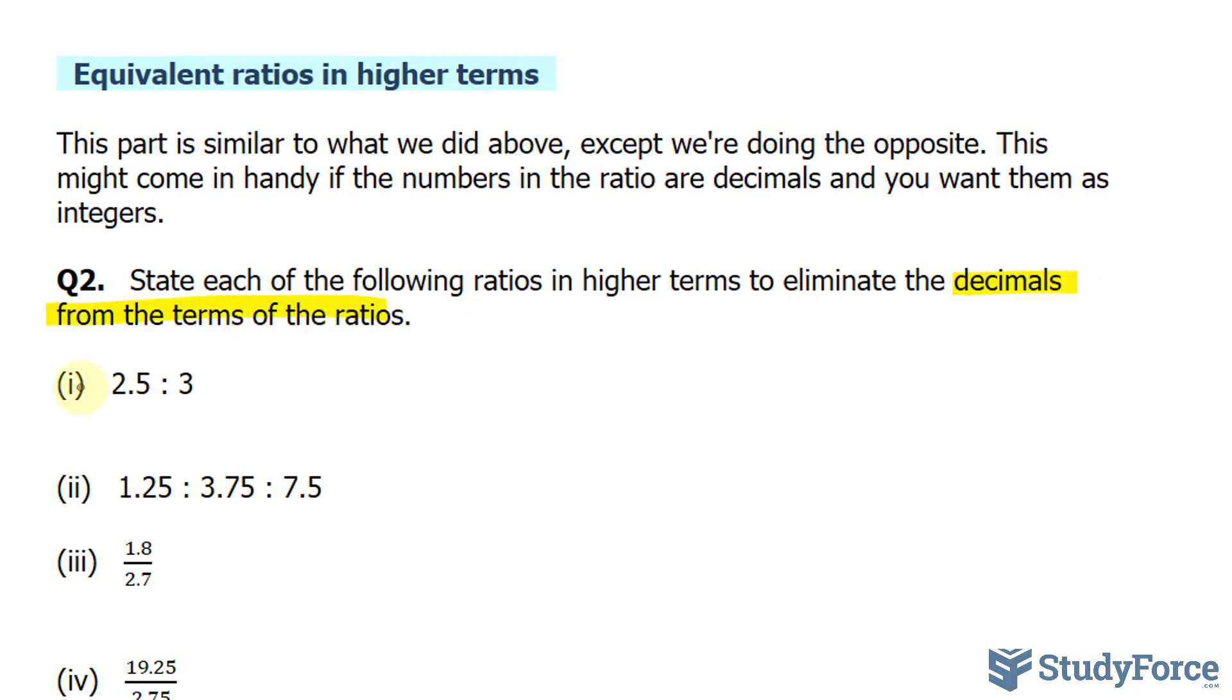In our first example, we have 2.5 to 3, and what you want to do is multiply both of these terms by a factor of 10. The reason why I chose a factor of 10 is because there's one number in the ratio that has one number after the decimal place. In our case here, 5. So the amount of digits after the decimal place dictates how many zeros after that first. If that's confusing to you, it will become more clear in the next example. So if I multiply this by 10, I end up with 25. And if I multiply this by 10, I end up with 30. This right here is in higher terms, and there are no more decimals.